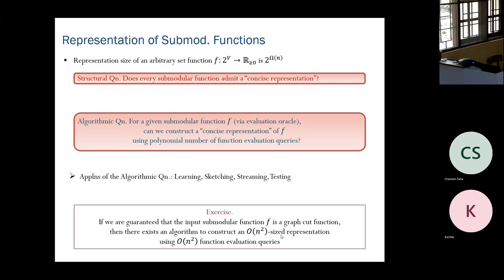Existence of a concise representation for graph cut functions is clear — you just construct the graph. And you can also construct it using polynomially many function evaluation queries. The structural question is an existential question; the algorithmic question asks us to construct such a representation using polynomially many queries. If the answer to the structural question is no, it doesn't make sense to study the algorithmic question. That's why the algorithmic question has been studied only for specific families of submodular functions.